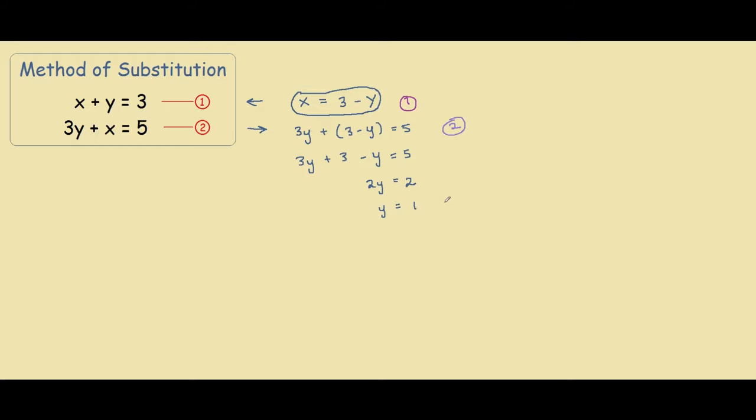So now that we have established one variable, we can actually use this y equals 1 and substitute it into either equation 1 or 2 to find the value for x. Over here, we have already rearranged equation 1. So let's just use this, it's more simple. We have x equals 3 minus y. And we just found y to be equal to 1. So we have x equals 3 minus 1. Solving that, you get 2.